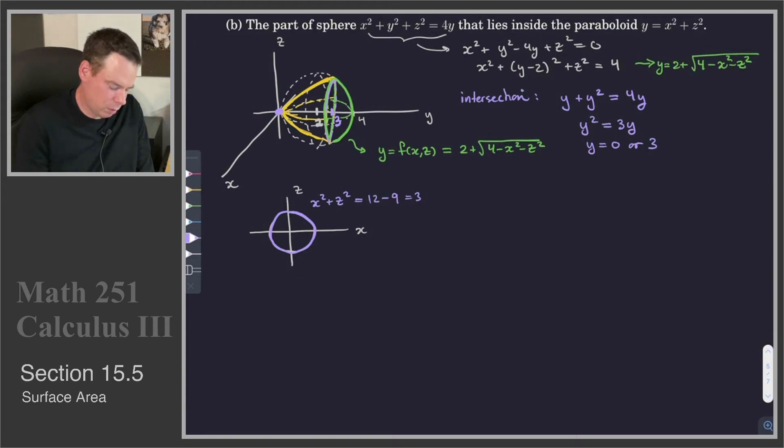In other words, this is a circle of radius square root of 3. And that's what we are integrating over. So we have that r in this case is going to go from 0 to root 3 and theta is going to go from 0 to 2 pi. Again, we're switching to polar coordinates.